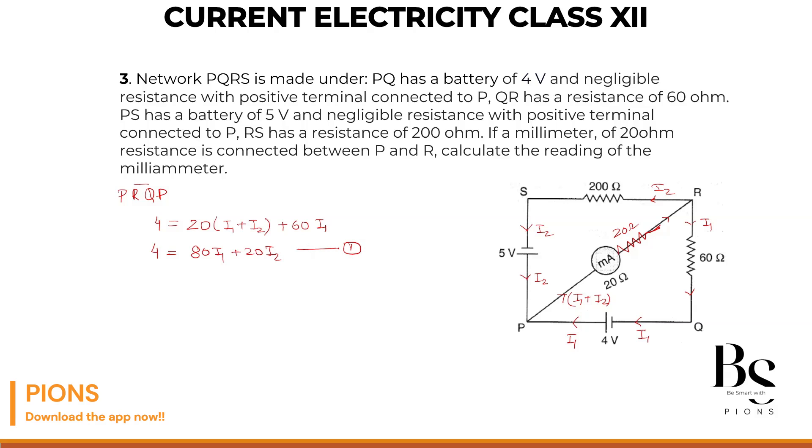Now let's take the upper loop. From upper loop, I am going from P to R to S and back to P. Is there any battery in this loop? Yes. 5 volt. I am going from P to R. Is there any resistance? Yes. 20 ohm. And what's the current flowing across that? I1 plus I2.